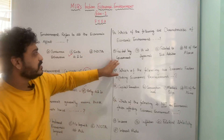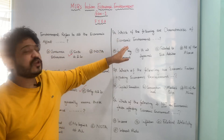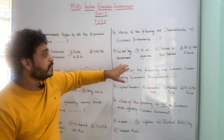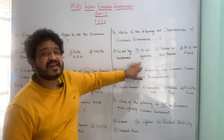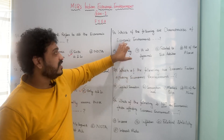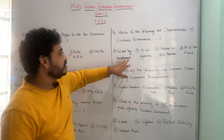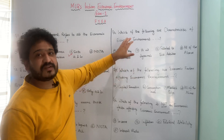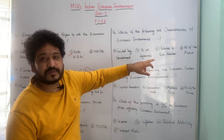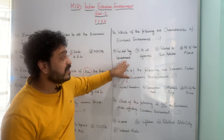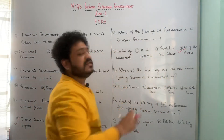The next MCQ on characteristics of economic environment: which of the following are characteristics of economic environment? Options are A: guided by government, B: it is dynamic, C: it is related to economic activities, and D: all of the above. Options A, B, and C all relate to characteristics of economic environment, so the correct answer is option D — all of the above.